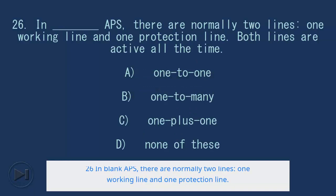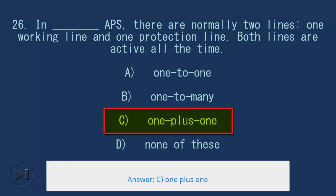26. In blank APS, there are normally two lines, one working line and one protection line. Both lines are active all the time. A. One-to-one, B. One-to-many, C. One-plus-one, D. None of these. Answer: C. One-plus-one.